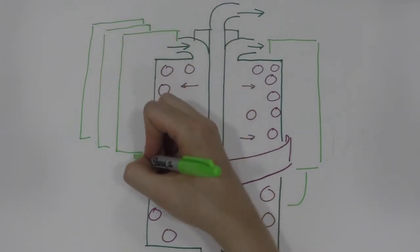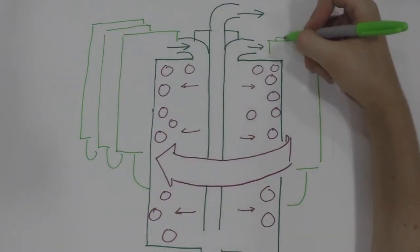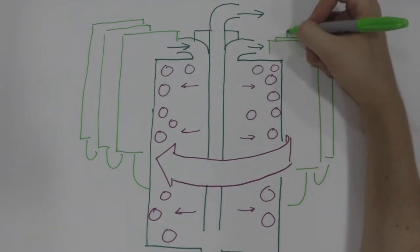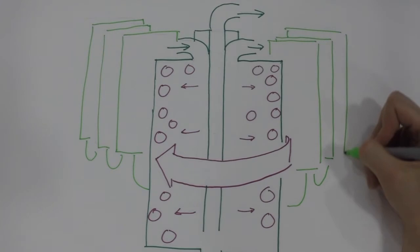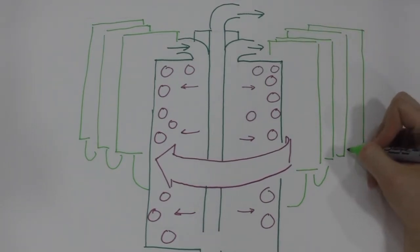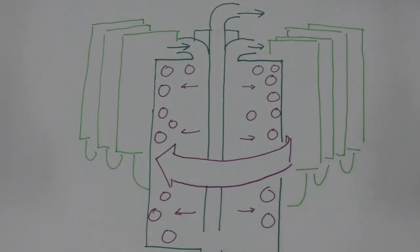During enrichment, spinning centrifuges are used to separate the heavier, more common U238, and the lighter, more useful U235. The U235 can then be made more concentrated. By arranging the centrifuges in a cascade, the uranium can be enriched to usable levels.